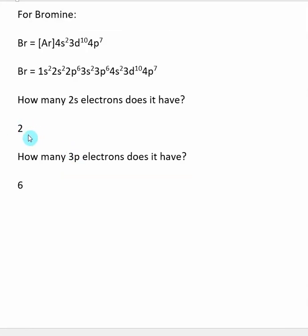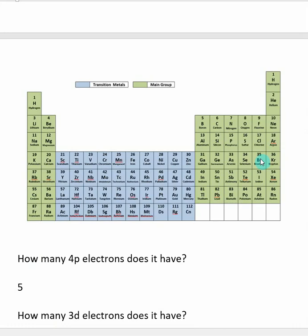Same thing with 3p. If you drew out the electron configuration completely, you can see that there's six electrons in there. Or if you realize that bromine needs to have all the subshells filled before it,